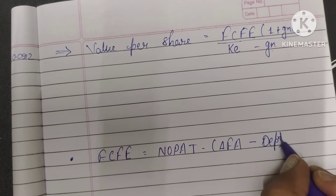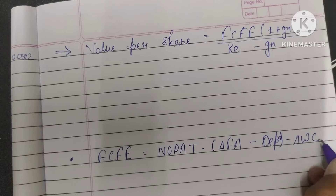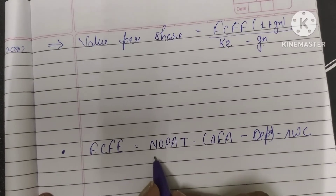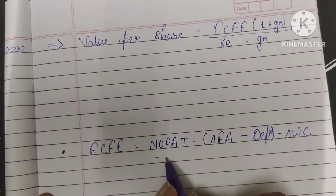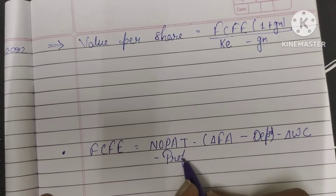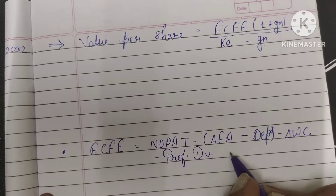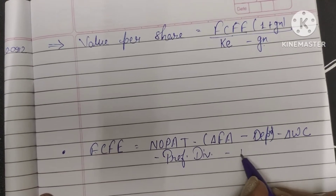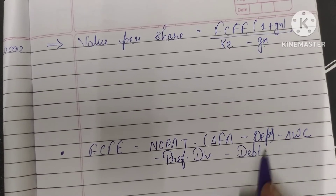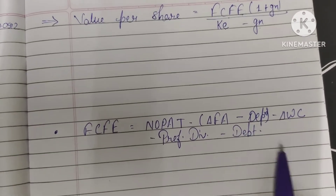The FCFE formula is: Net Operating Profit After Tax (EPS), minus change in fixed assets (capital expenditure minus depreciation), minus change in working capital, minus preference dividend, minus debt repayment. These are the components we covered in the formula video.